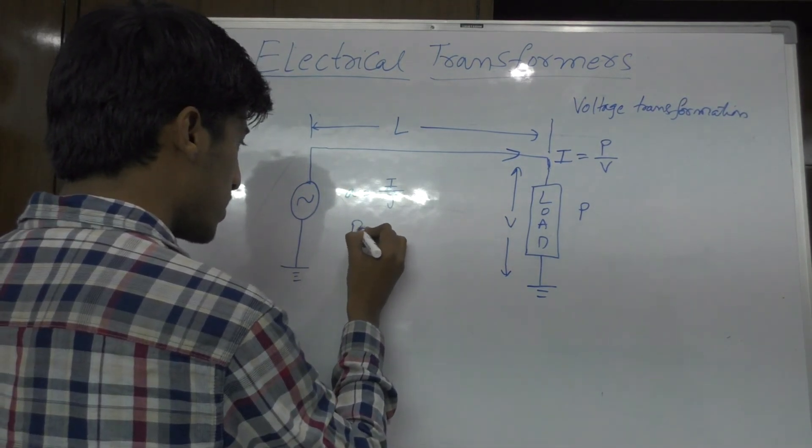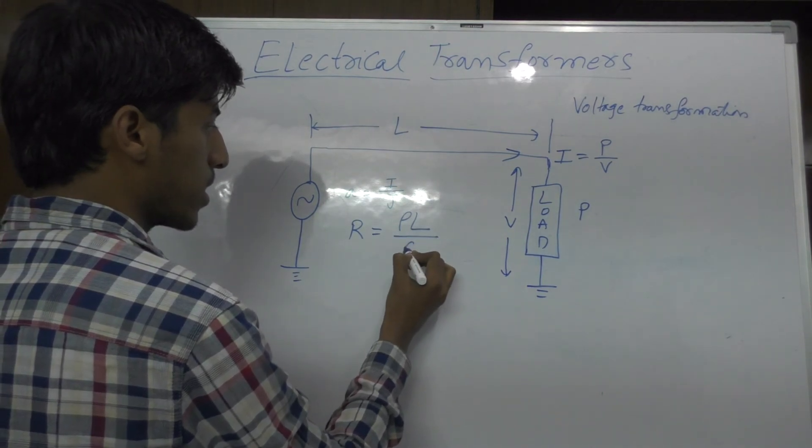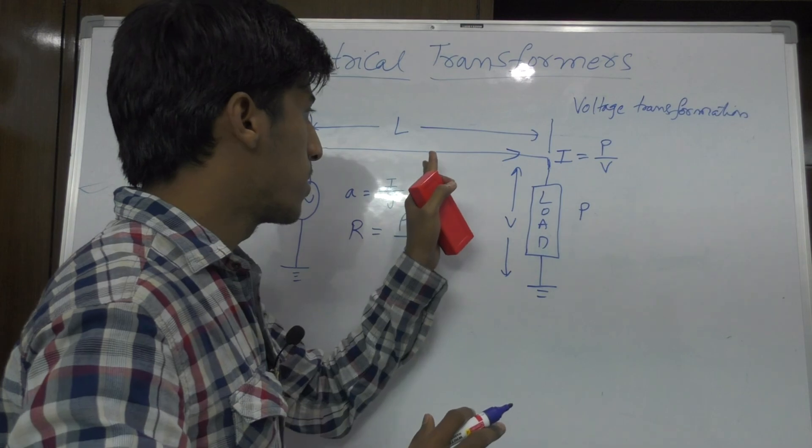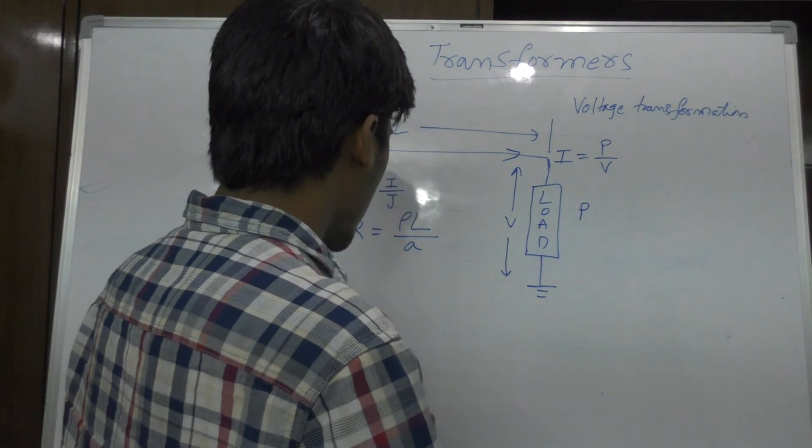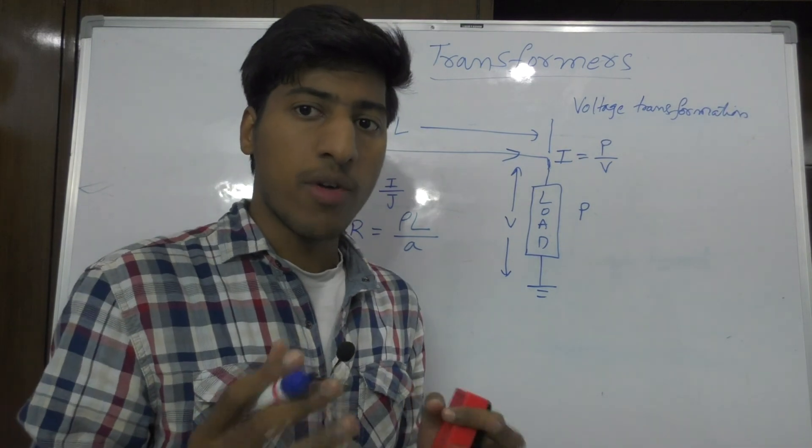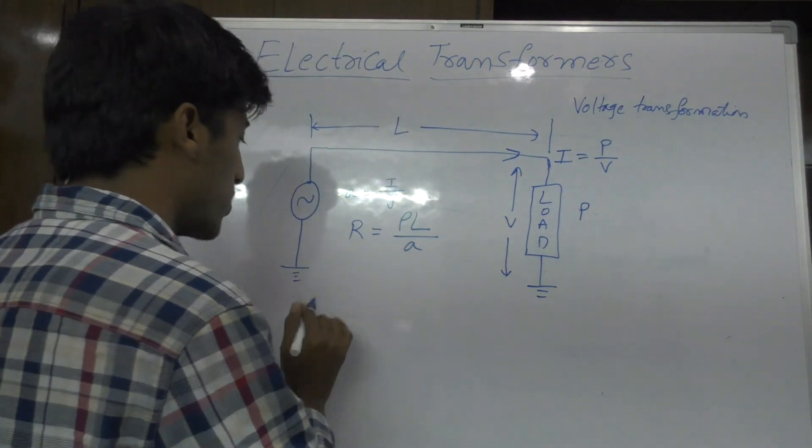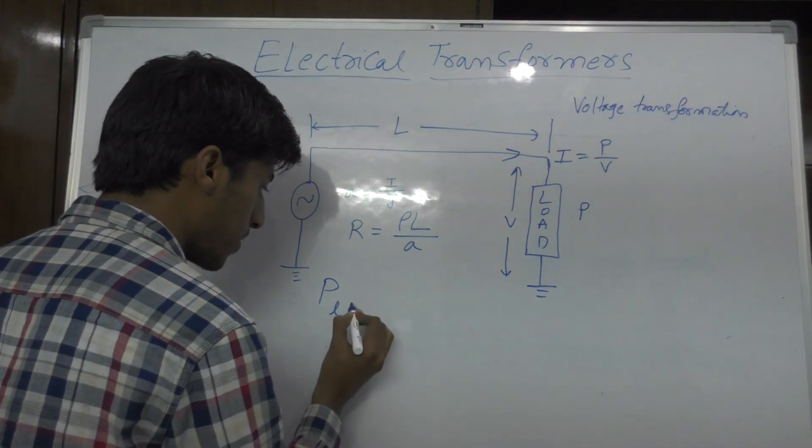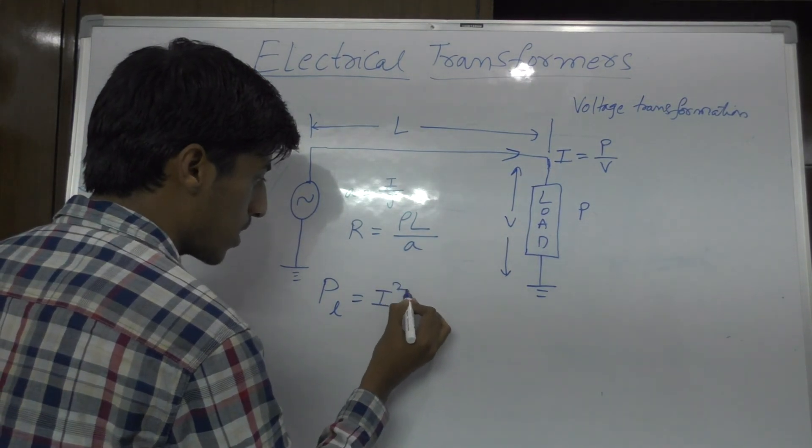Now the resistance R is equal to rho L by A. Rho is the resistivity of the conductive material. Now let us find out the power loss. Power loss in the transmission, that is represented as PL, is equal to I squared R.